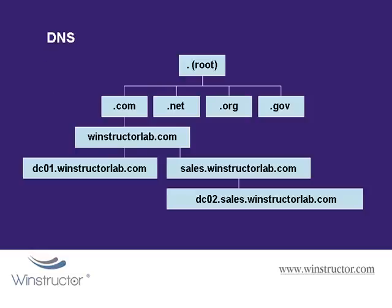The DNS structure is a hierarchical structure that starts with a root domain designated by a period or a dot. The root domain is operated by a non-profit group called the Internet Corporation for Assigned Names and Numbers, or ICANN. Beneath the root domains are other top-level domains: .com, .net, .org, .gov, and so forth. These are referred to as top-level domains, or TLDs, and control of these domains has been delegated from ICANN to other companies to manage.